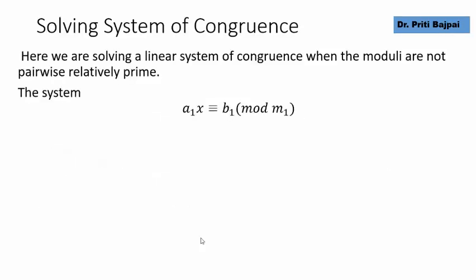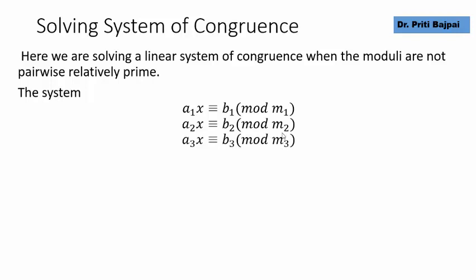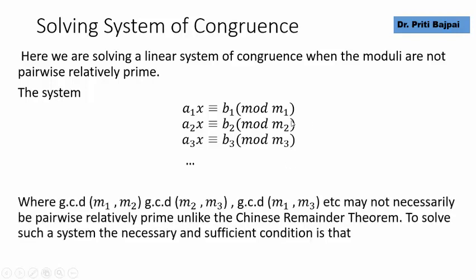What we mean by this is: given a system A1X ≡ B1 mod M1, A2X ≡ B2 mod M2, A3X ≡ B3 mod M3, where there can be any number of congruences. In this system, if the GCD of M1 and M2 is not 1, GCD of M2 and M3 is not 1, and GCD of M3 and M1 is not 1, then we cannot use the earlier method of the Chinese Remainder Theorem.